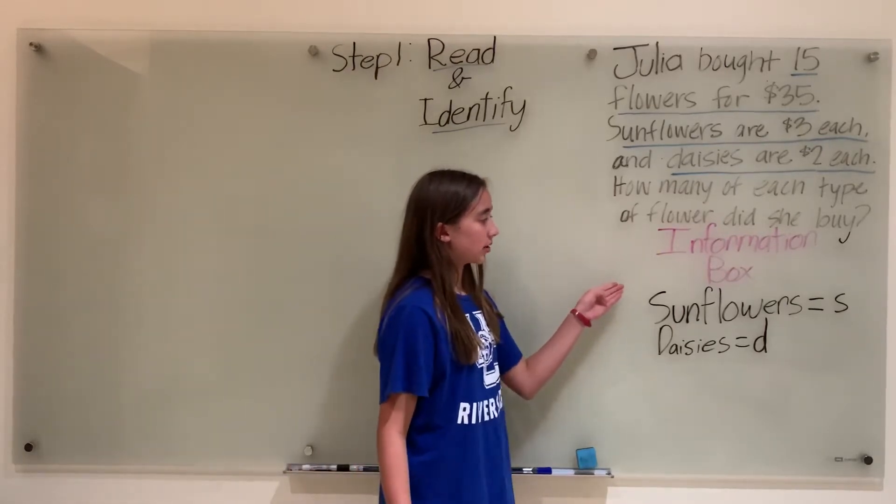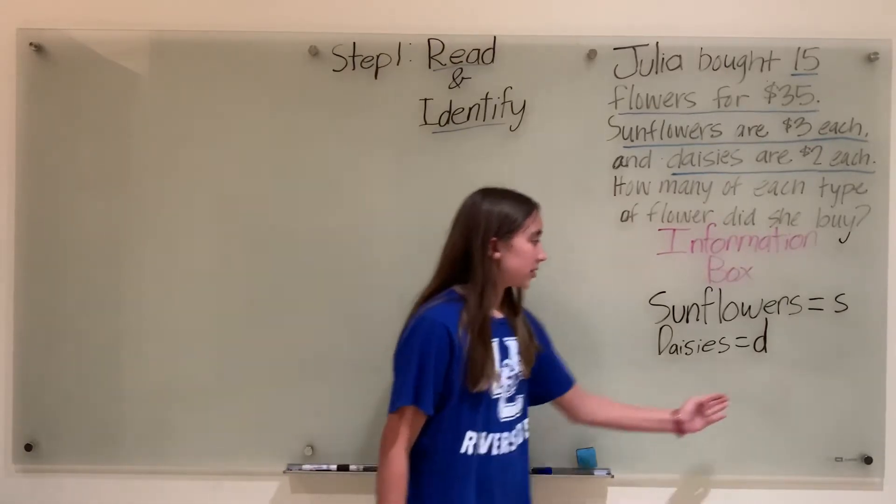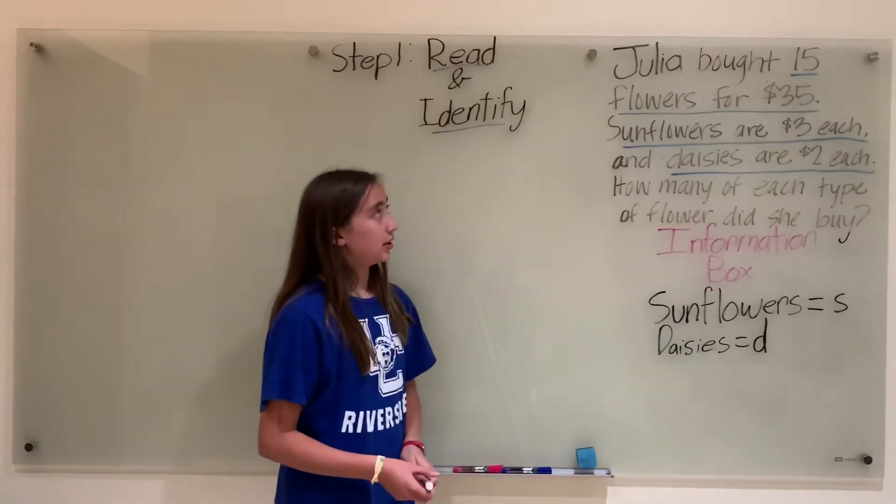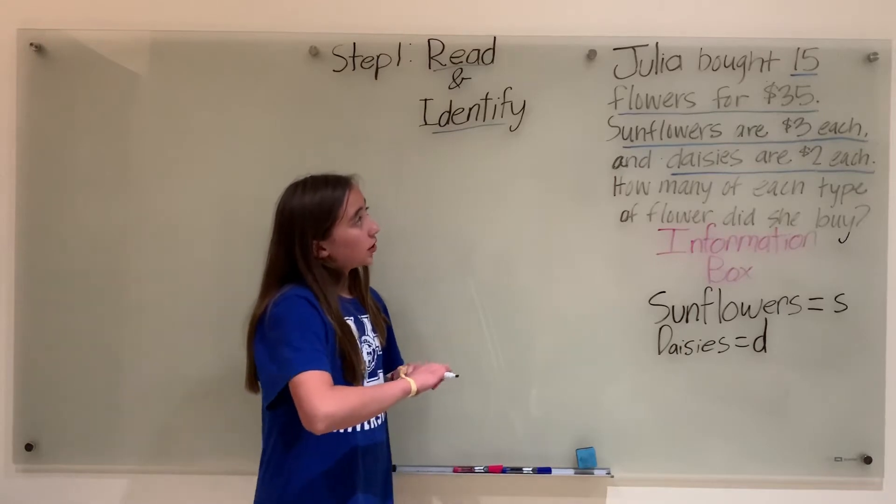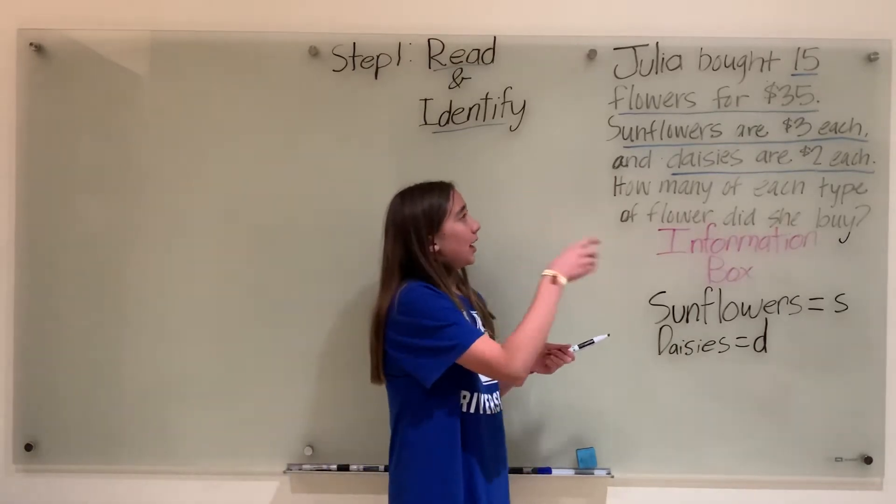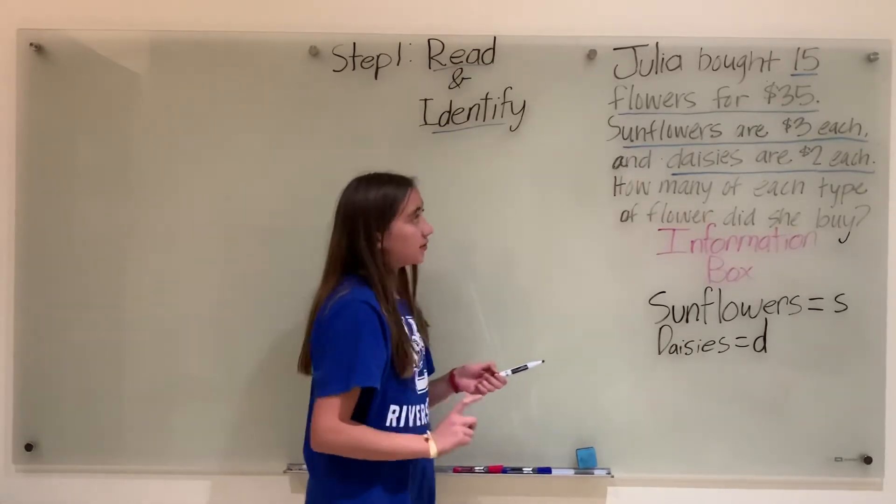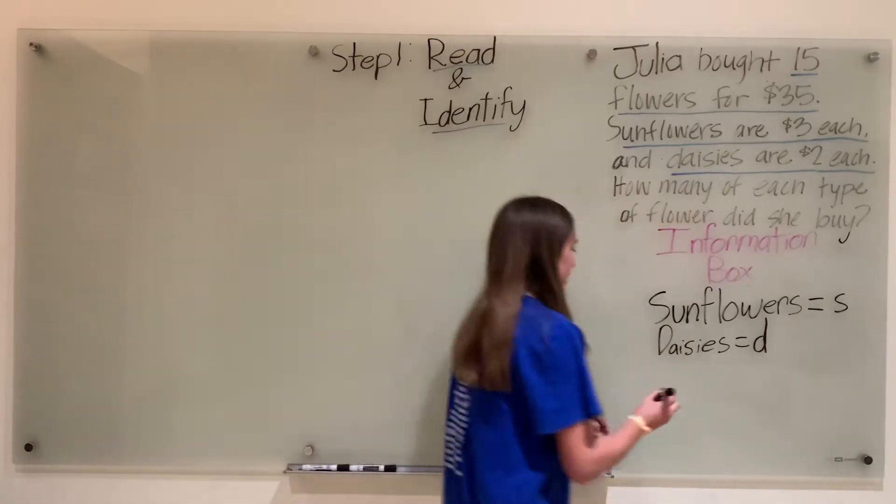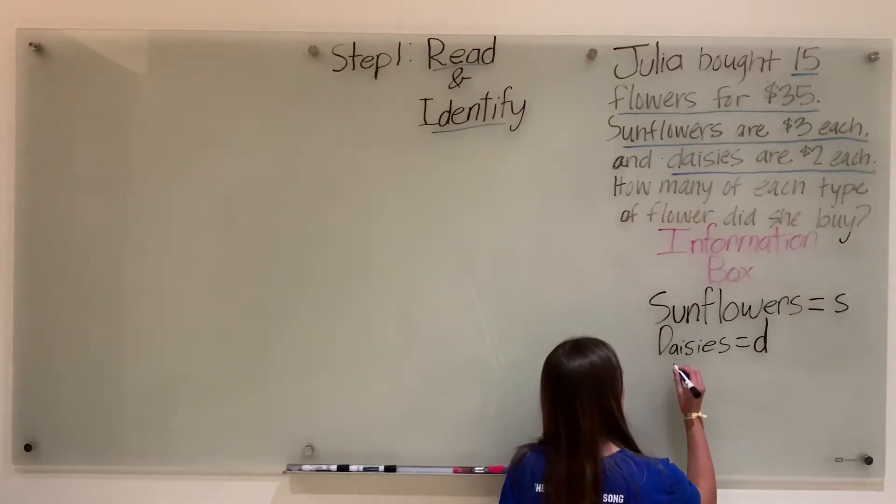Down here in our information box, we have sunflowers equals s and daisies equals d. So for our first equation, what we get is Julia bought 15 flowers, meaning that as a total Julia has 15 flowers and there's only two types of flowers. So we get s plus d equals 15.